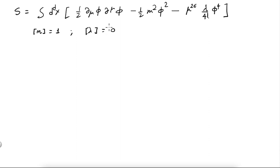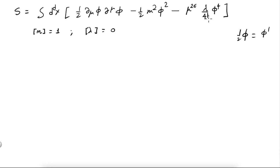Now, I mentioned before that we can redefine fields — there is nothing sacred about the factor of half in front of del-mu phi del-mu phi. You could absorb that half into phi by defining a new field. What I am going to do now is redefine the fields and the parameters again, and you will see later why that will be useful.